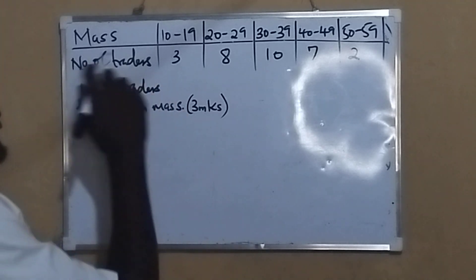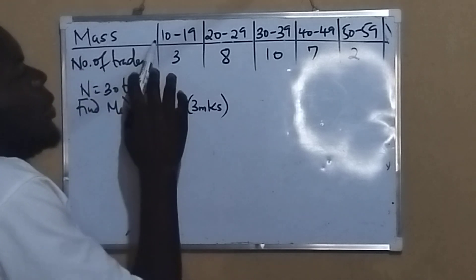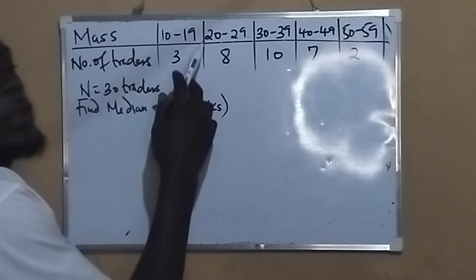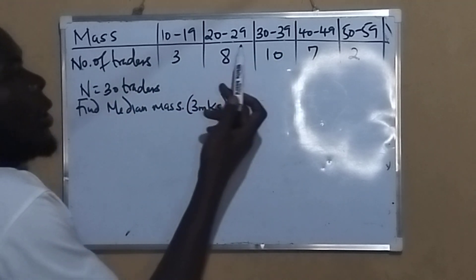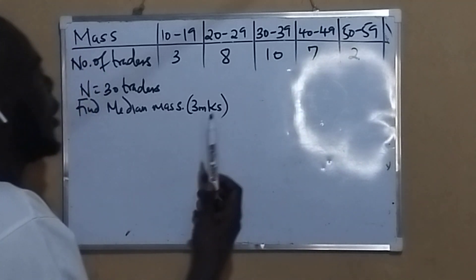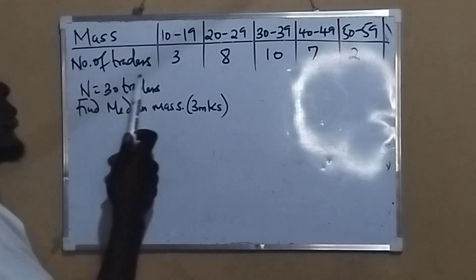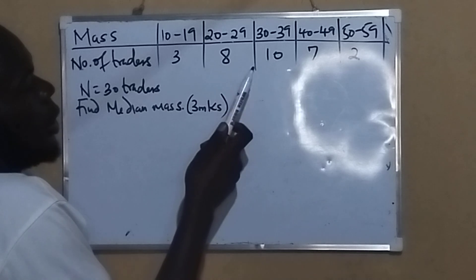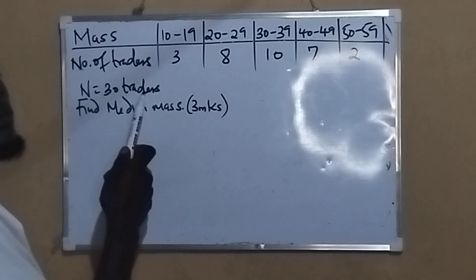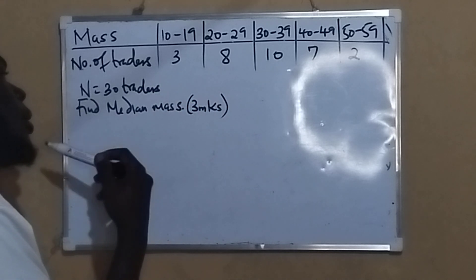We have been given the masses in terms of classes 10 to 19, 20 to 29, 30 to 39, 40 to 49, 50 to 59. We have a table here with the number of traders, with the total equaling 30 traders.